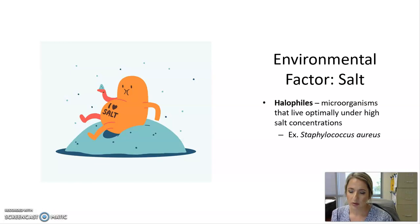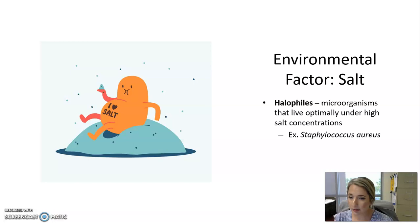Some microorganisms are unique in that they actually prefer to live in a high salt concentration. Most microorganisms, if put in an environment with high salt concentration, experience a hypertonic environment that pulls moisture out of their cells and they shrivel and die. The exception to that rule are halophiles — halophilic bacteria that prefer to grow and live in a high salt concentration.